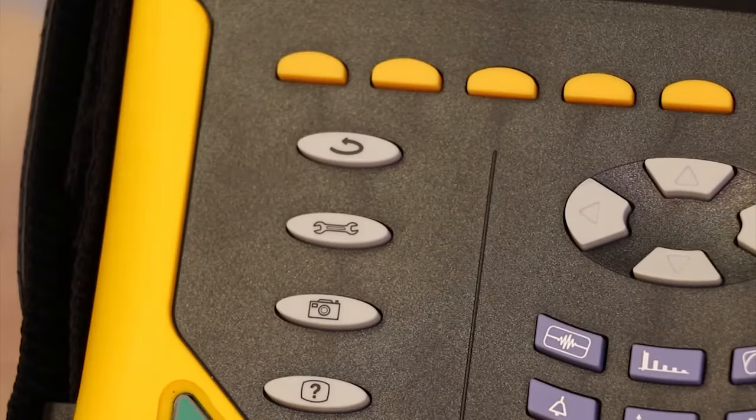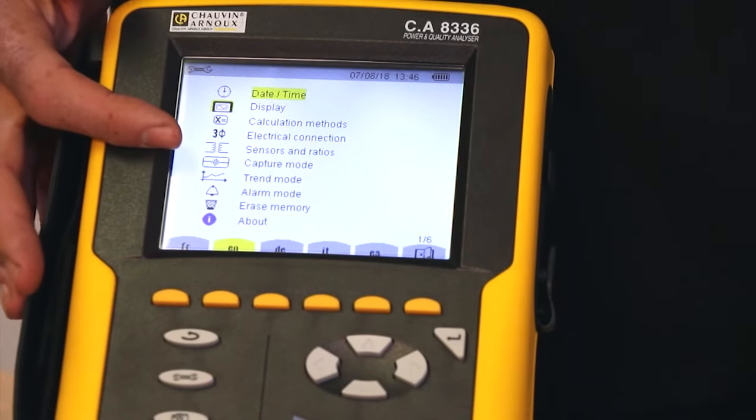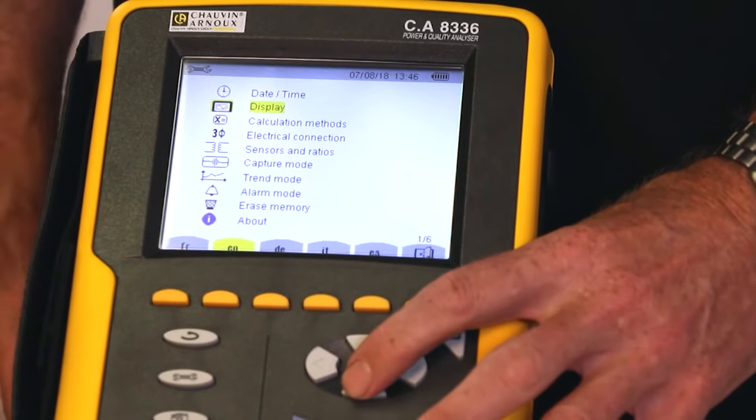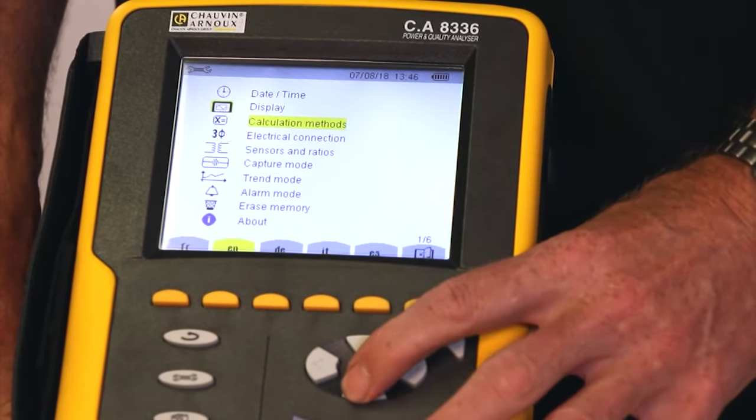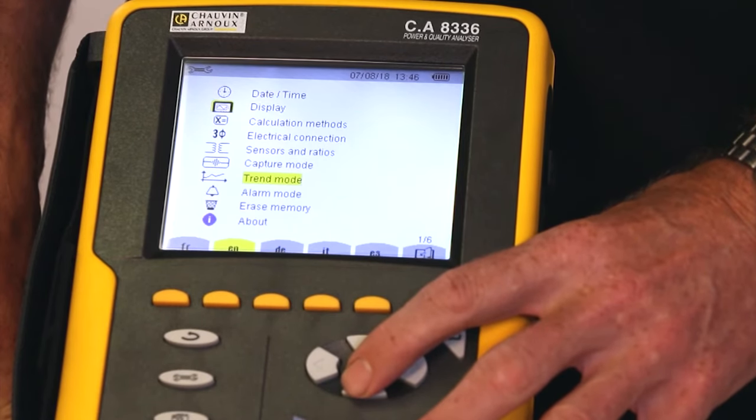The first thing we're going to do is show you the setup menu by pressing the setup key. This takes us to a display where we can see and change the date and time, the display contrast, calculation methods, the electrical connection, the current sensors and ratios we've connected, the capture mode, trend mode and alarm mode.